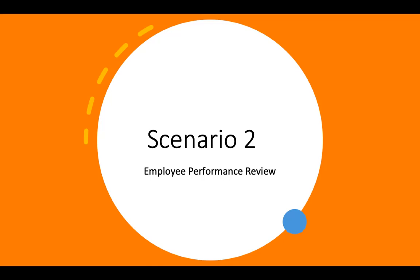Scenario number two: In a multirater feedback for an employee, the raters would include their direct manager, other employees that they work closely with in their department, and the customers. The assessments are made anonymous and turned into the employee and manager to look at.